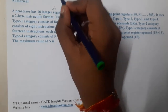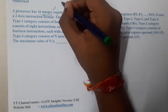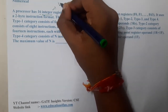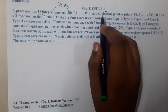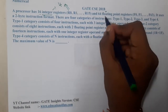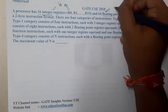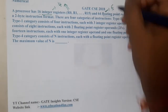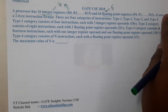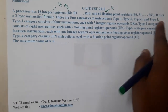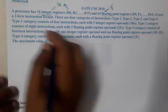Since there are 16 integer registers, we need 4 bits to represent them. There are also 64 floating point registers, and since 2^6 = 64, we need 6 bits for those. The processor uses a 2-byte instruction format.